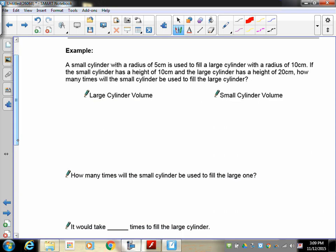A small cylinder with a radius of 5 centimeters is used to fill a large cylinder with a radius of 10 centimeters. If the small cylinder has a height of 10 centimeters and a large cylinder has a height of 20 centimeters, how many times will the small cylinder be used to fill the large cylinder? So your first job is to find the surface, sorry, the volume of both of these. So pause the recording and do it.